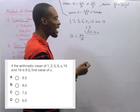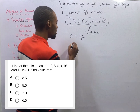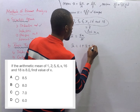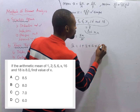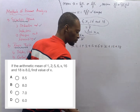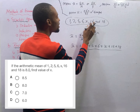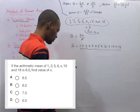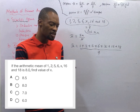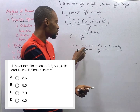We have 7 values: 1, 2, 5, 6, S, 16, and 18. So the mean x̄ is 1 plus 2 plus 5 plus 6 plus S plus 16 plus 18, all over 7. They told us that the mean is 8, meaning adding everything over 7 gives you 8.